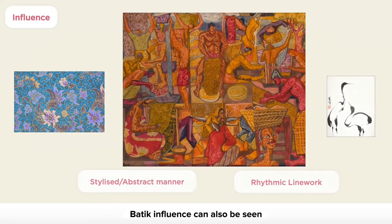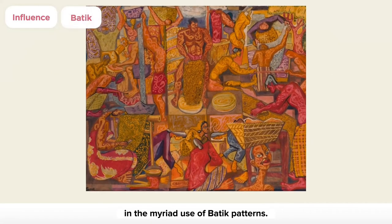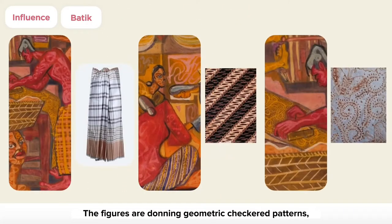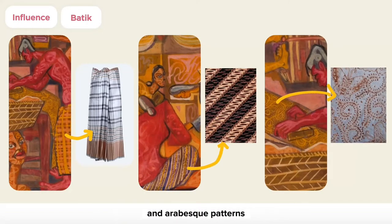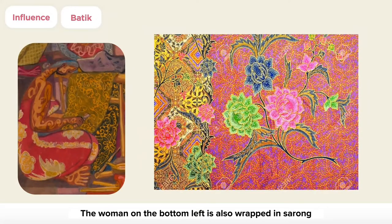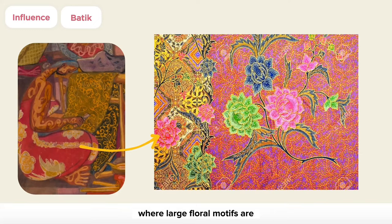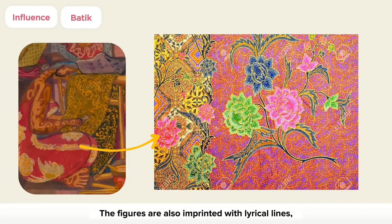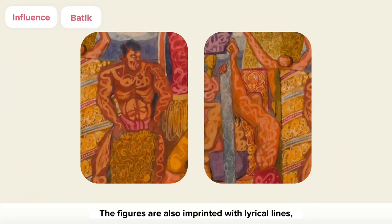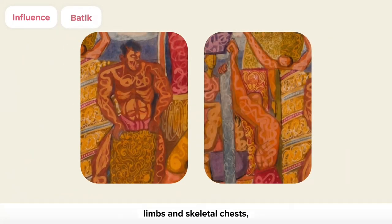Batik influence can also be seen in the myriad use of batik patterns. The figures are donning geometric checkered patterns, repeated bands of vine-like patterns, and arabesque patterns lined with dots. The woman on the bottom left is also wrapped in a sarong with a uniquely Malaysian pattern, where large floral motifs are printed on a plain background. The figures are also imprinted with lyrical lines, as seen on the men's muscular limbs and skeletal chests.